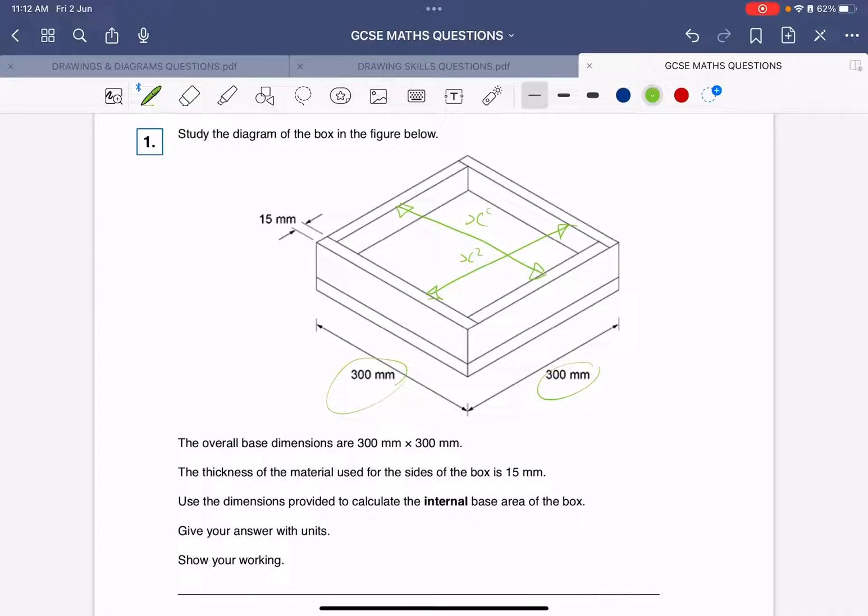Okay, so how do we find out the internal length? We know we've got 300. We've got this little chappy here, 15 mil, and that's the thickness of the material. Now, the more observant members of you will notice that there's material on both sides.